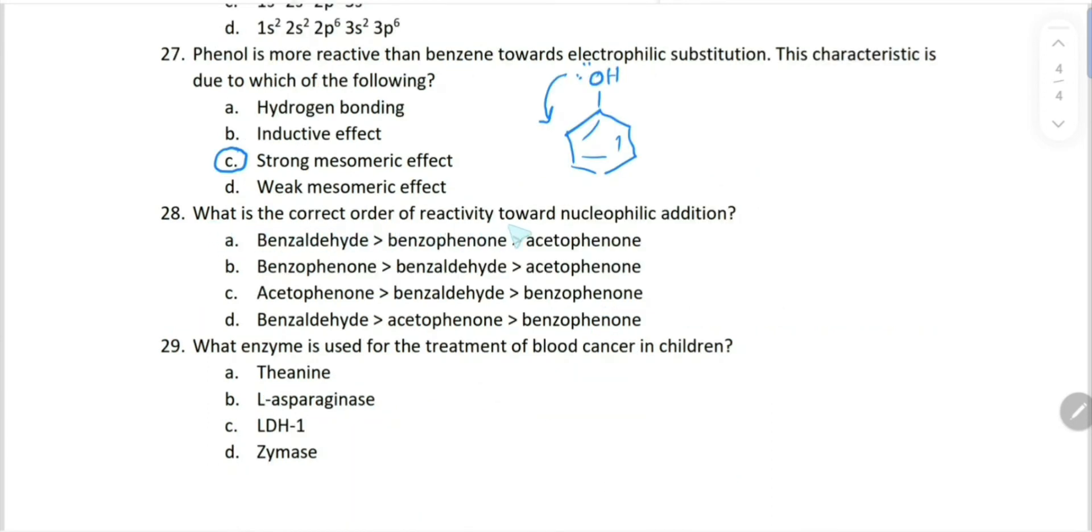What is the correct order of reactivity towards nucleophilic addition? Benzaldehyde, benzophenone, and acetophenone. Let's see. Benzaldehyde: this is benzene ring having this aldehyde functional group. The other one is benzophenone - benzophenone means diphenyl ketone. We have these two benzene rings attached to a keto group. And the next is acetophenone - acetophenone having a benzene bonded to carbon double bond O and CH3.